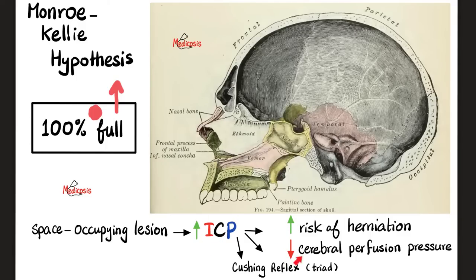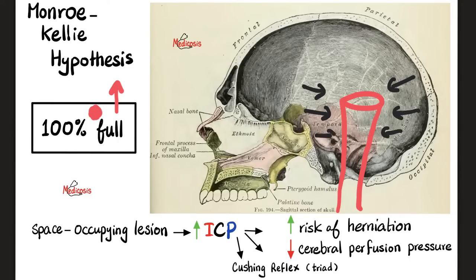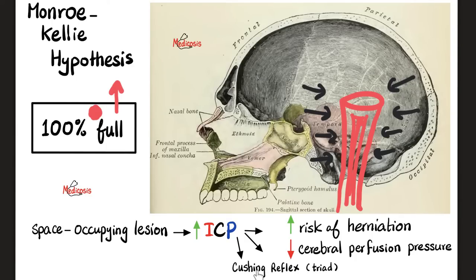High intracranial pressure is going to decrease cerebral perfusion pressure. Think of an artery — for example, the vertebral artery — going up to supply your brain. It has pressure inside it. However, if intracranial pressure is so high, it will compress the vertebral artery and suffocate it. The perfusion pressure going to the brain will decrease — this is called decreased cerebral perfusion pressure. Also, anytime there is intracranial hypertension, Cushing reflex can happen, especially if you press on the brain stem. I have a separate video on Cushing reflex in my neurology playlist.